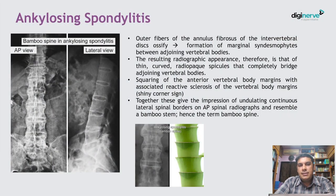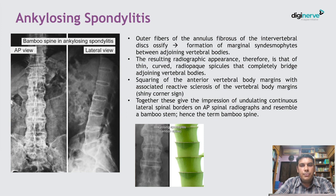In ankylosing spondylitis, outer fibers of the annulus fibrosus of the intervertebral disc are ossified, which causes formation of marginal syndesmophytes between the adjoining vertebral bodies. This gives its radiographic appearance as thin curved radiopaque spicules that completely bridge adjoining vertebral bodies.